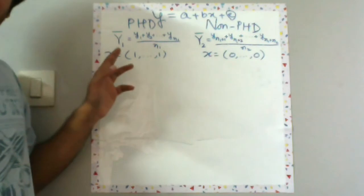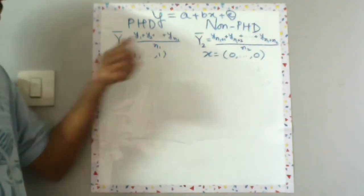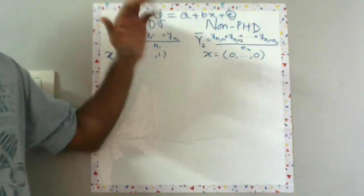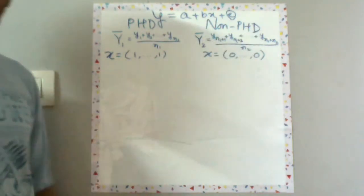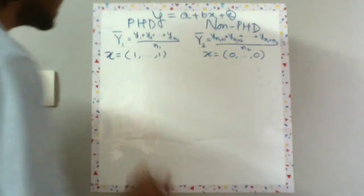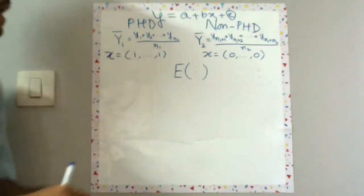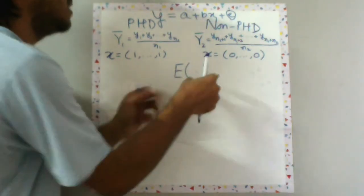We can also get the average salaries of PhD graduates as well as non-PhD graduates. So let's denote the average salary of PhD graduates as capital Y1 bar, and similarly Y2 bar is the average salary for non-PhD graduates.